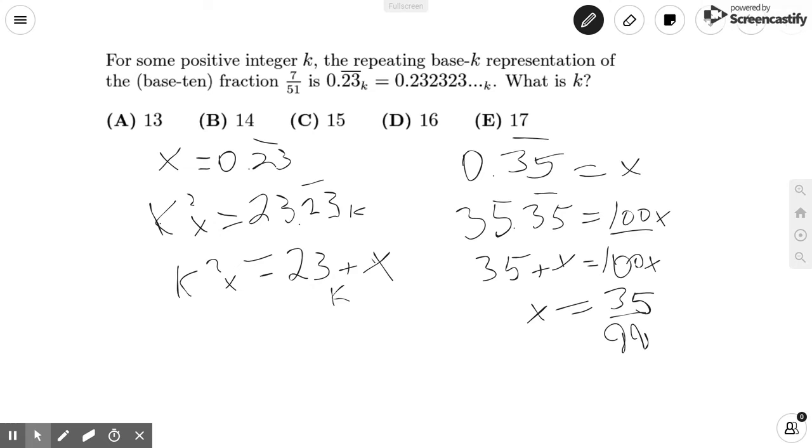So what is 23 in base k? Well, that would be two k's and then three ones. So we know that k squared x is going to be equal to 2k plus 3 plus x.